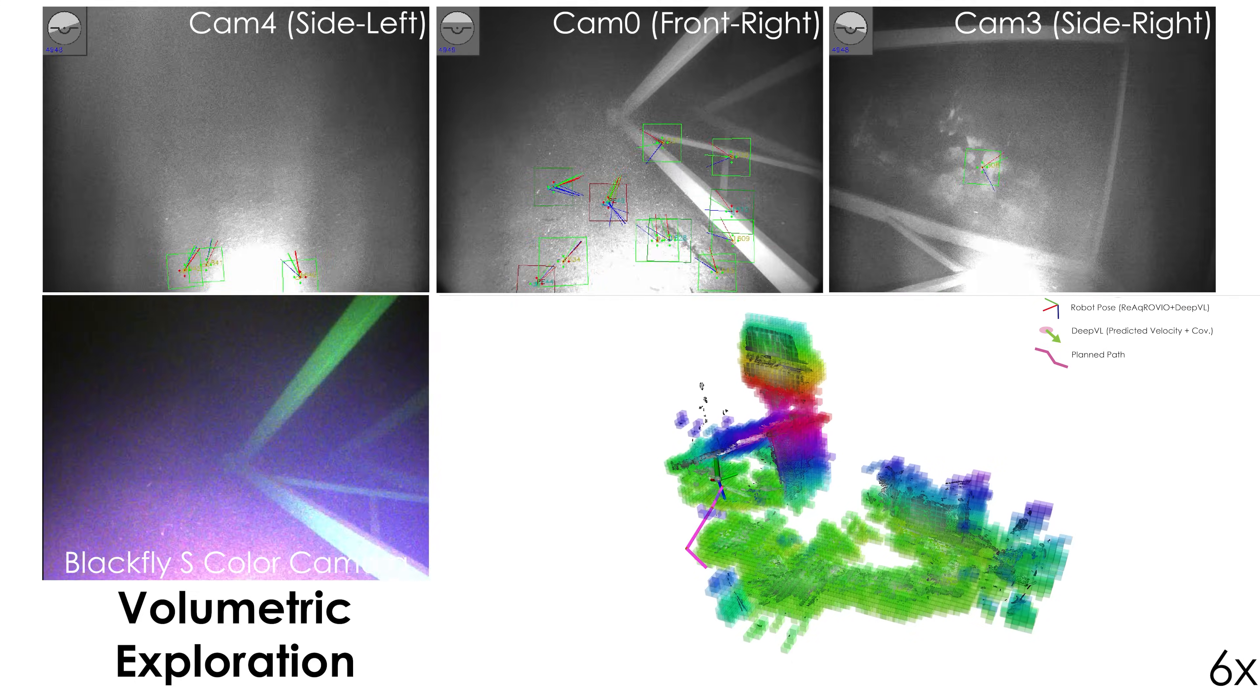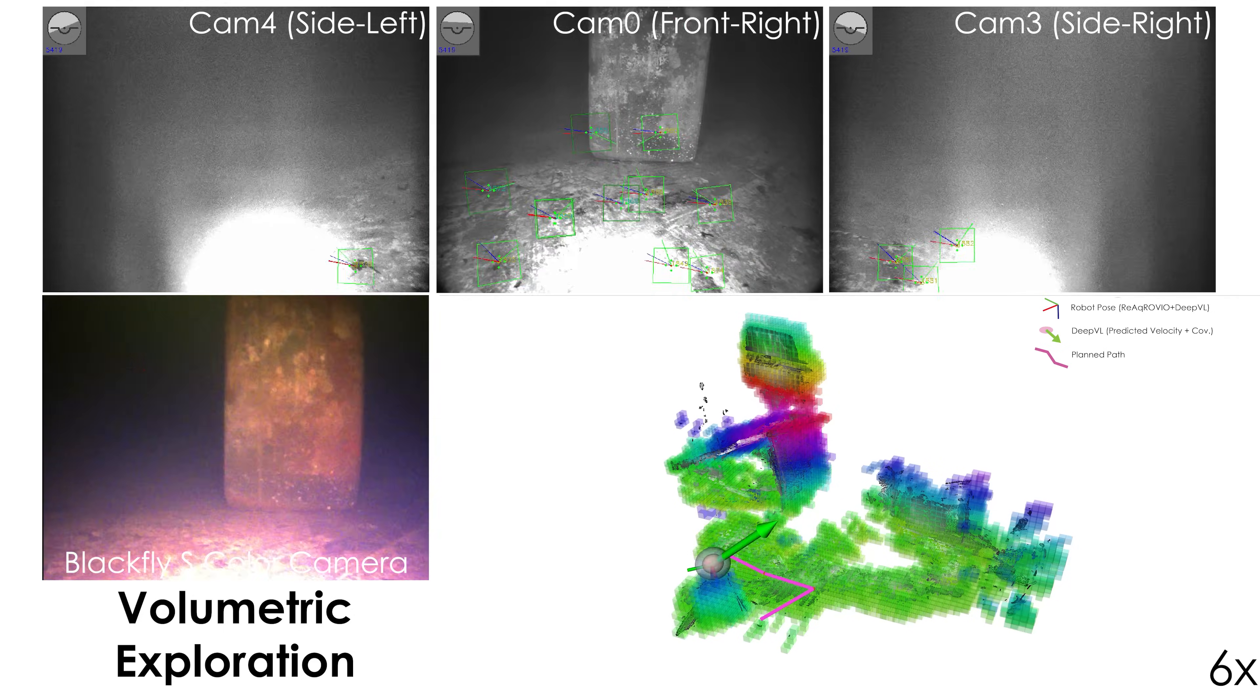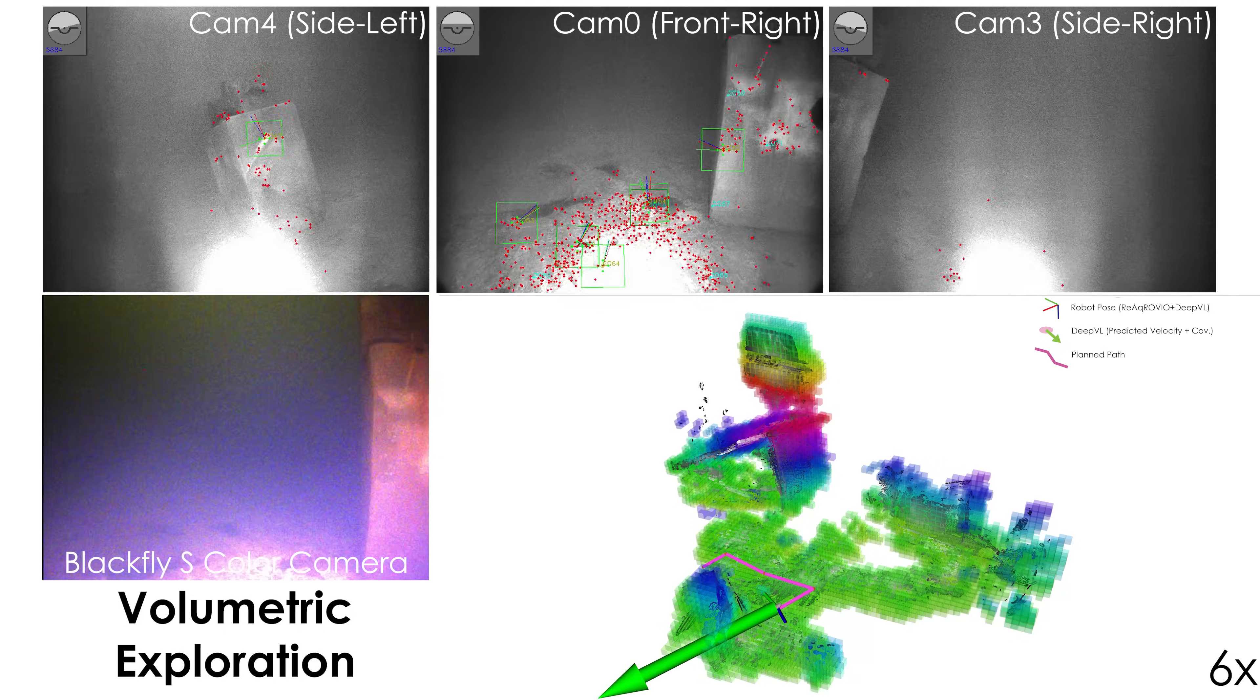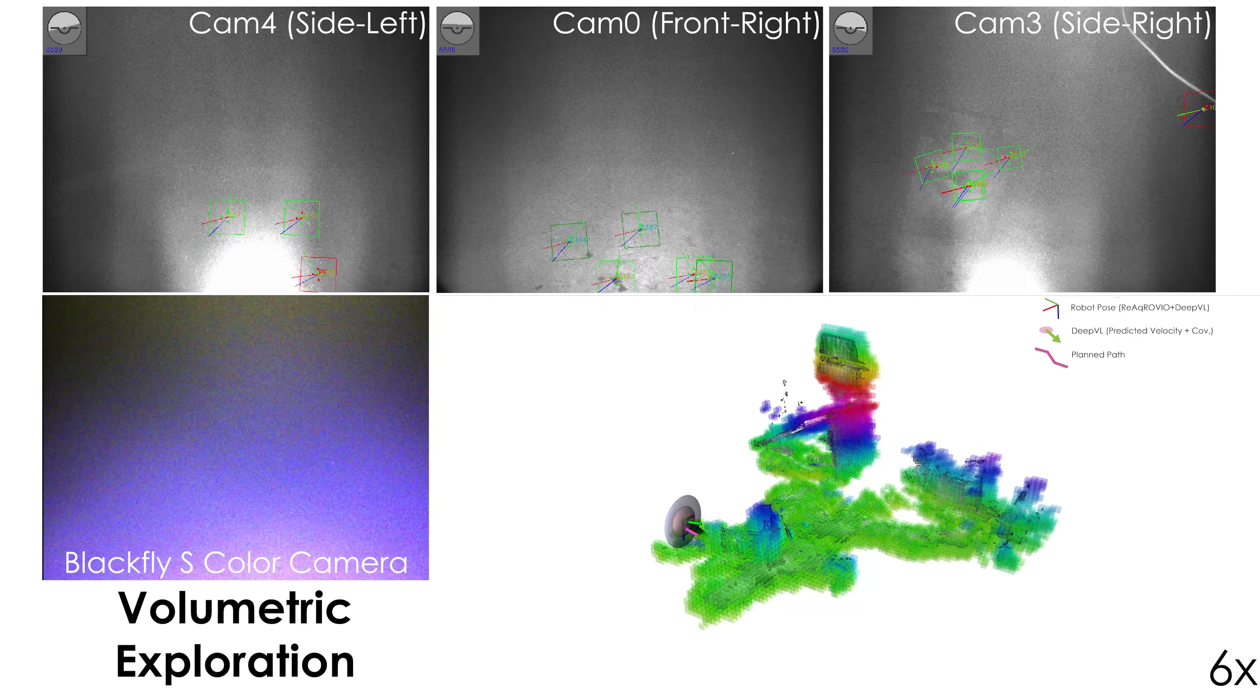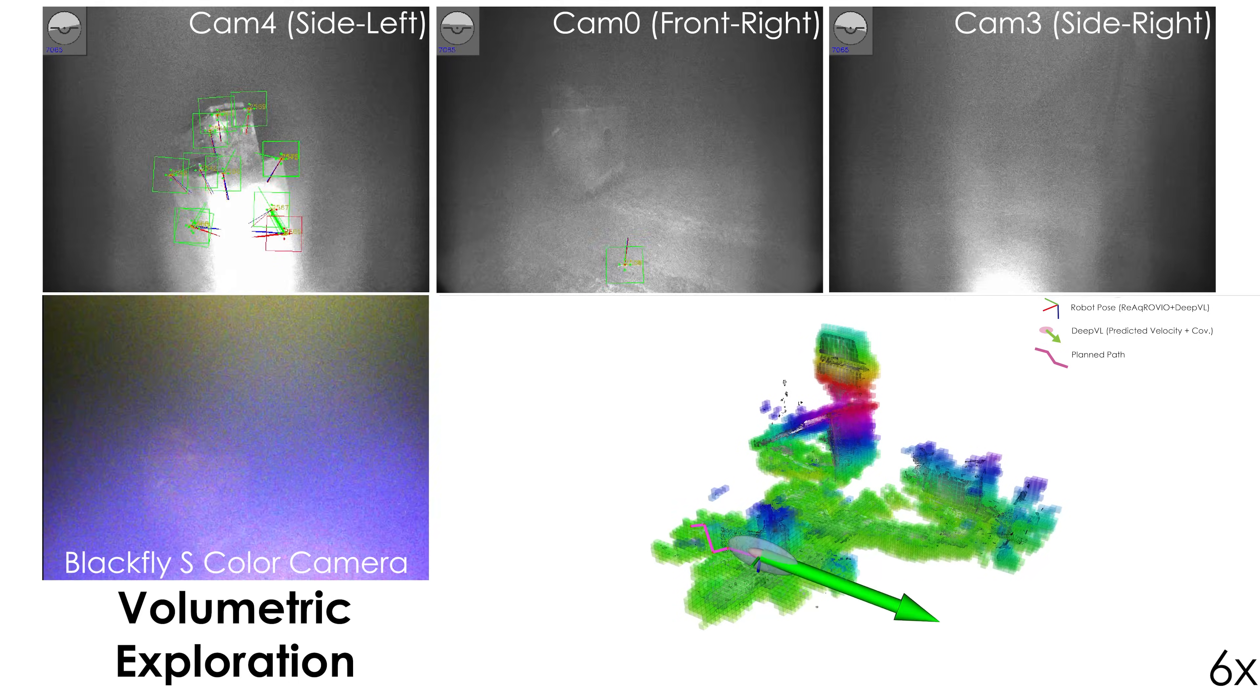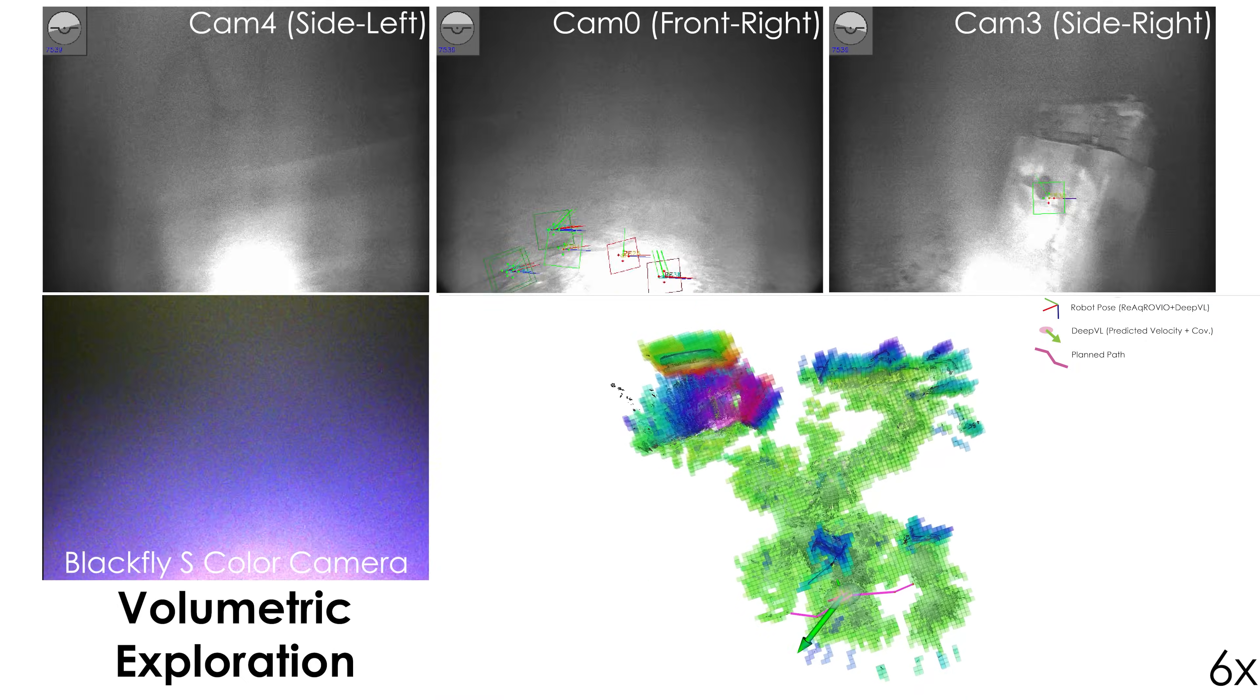The robot's state estimation is based on combination of two methods, Refractive Aquatic VIO and DeepVL. Refractive Aquatic VIO is a refraction-aware multi-camera visual inertial state estimation method that estimates both the robot state and the refractive index of the water, which in turn enables deployment without any prior medium-specific camera calibration.